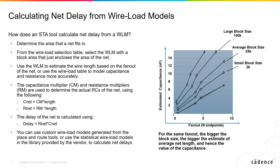Therefore, to calculate net delay using the wire load models method, you need various wire load models based on various block sizes. The STA tool determines an area that a particular net fits into and, using the wire load selection table, selects the block area that encloses the area of the net. Then, you use the wire load model to obtain the average wire length for a given fanout and block size, and finally use the capacitance multiplier and resistance multiplier to determine the delay of the net.